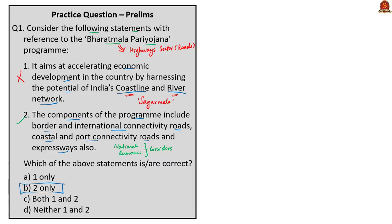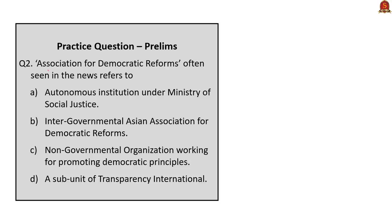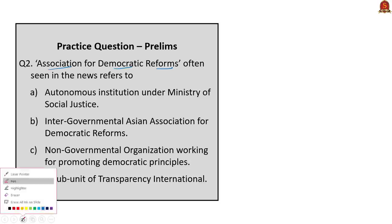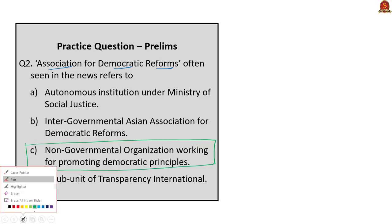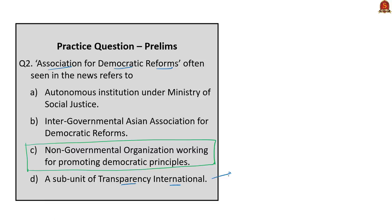Practice prelims question 2: Association for Democratic Reforms — often seen in the news — refers to what? This is a direct question. The correct answer is option C: a non-governmental organization working for promoting democratic principles. Note that Transparency International works to achieve a vision of a world where government, business, civil society and daily lives of people are free of corruption.